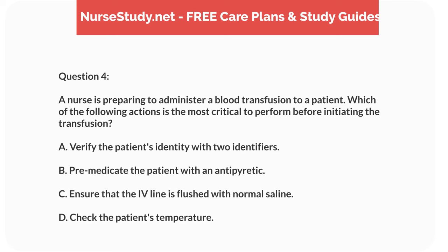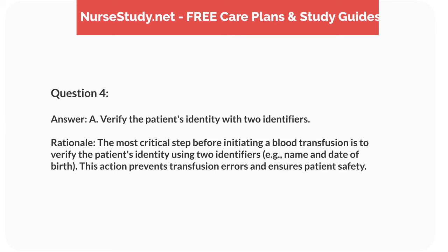Question 4. A nurse is preparing to administer a blood transfusion to a patient. Which of the following actions is the most critical to perform before initiating the transfusion? A. Verify the patient's identity with two identifiers. B. Premedicate the patient with an antipyretic. C. Ensure that the intravenous line is flushed with normal saline. D. Check the patient's temperature. Answer: A. Verify the patient's identity with two identifiers. Rationale: The most critical step before initiating a blood transfusion is to verify the patient's identity using two identifiers, e.g., name and date of birth. This action prevents transfusion errors and ensures patient safety.